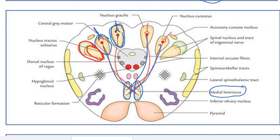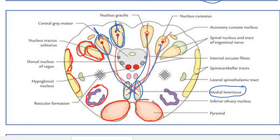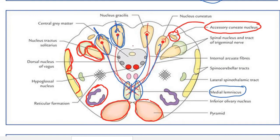Between the nucleus gracilis/cuneatus and the medial lemniscus, the fibers are called the internal arcuate fibers. At this level we also see the nucleus and tract of the trigeminal nerve, the spinocerebellar tract, the inferior olivary nucleus, and the pyramid, which contains fibers from the cortex descending to the spinal cord to decussate at the pyramidal decussation. The accessory cuneate nucleus, which receives proprioceptive fibers, is also present here.